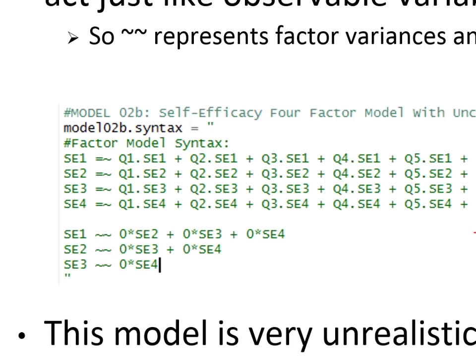Once you define a factor, it acts like a variable — anything you would do with a variable like predict it, do something with its variance or covariance, works the same way. That's SEM: we have things that are latent and things that are observed, and in the end we want to do a regression with a combination of them. The last line looks like a regression — some things are factors and some things are observed.